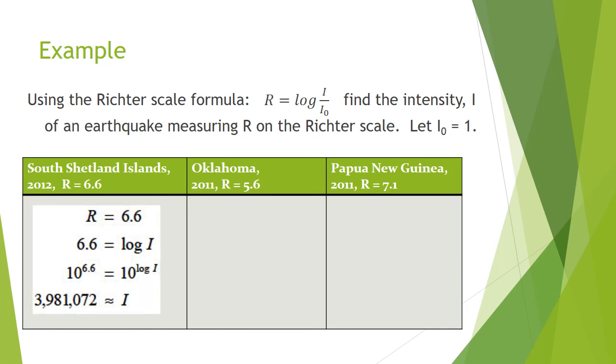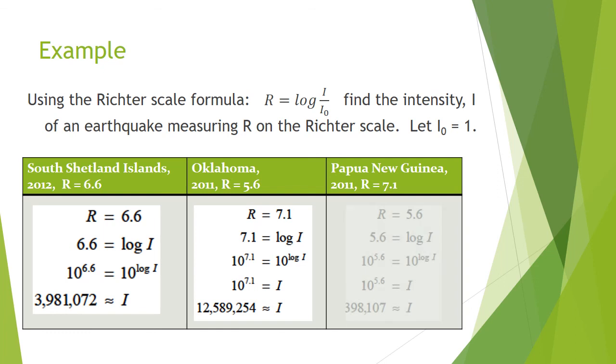The intensity for the South Shetland Islands was 3,981,072. For Oklahoma, it was 12,589,254. And for Papua New Guinea, I think we might be missing something here, so I think this answer kind of got cut off. But if you follow that, put 10 to the 5.6, and that would give you, no, it's right, I'm sorry, 398,107.